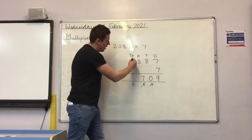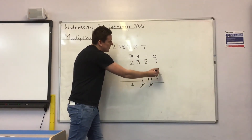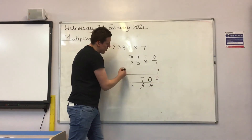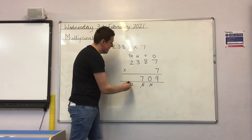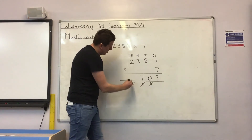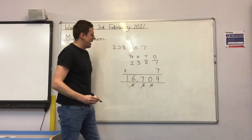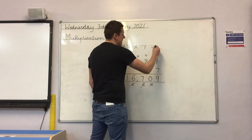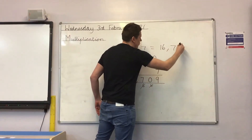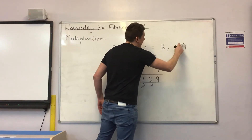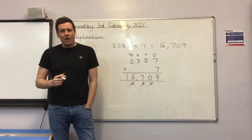Now in my thousands column, I've got 2000 times 7, which is 14, add the 2, is 16,000. So the answer, Year 5, is 16,709. We've posted some questions for you to have a go at online. Look forward to seeing you complete those.